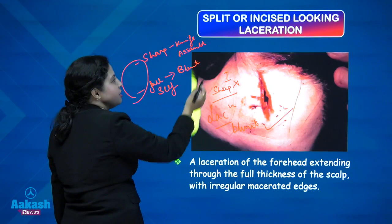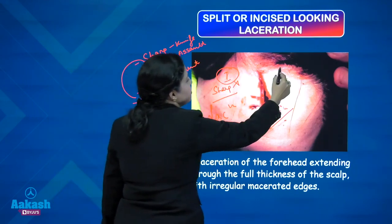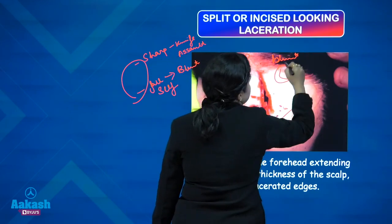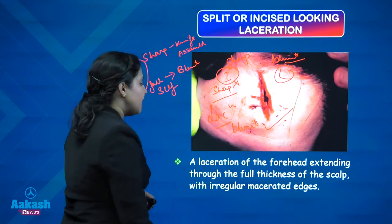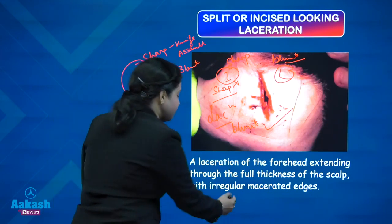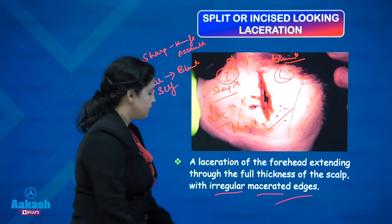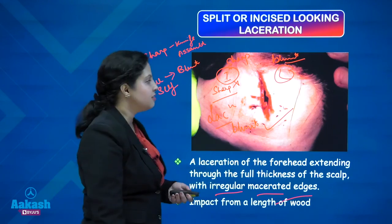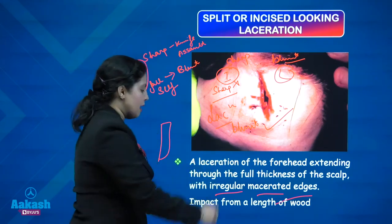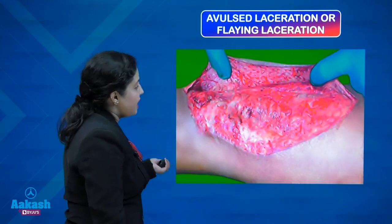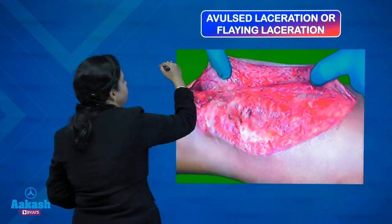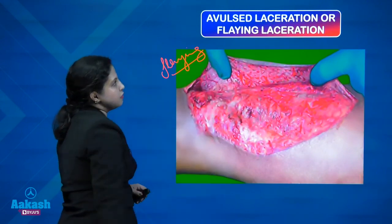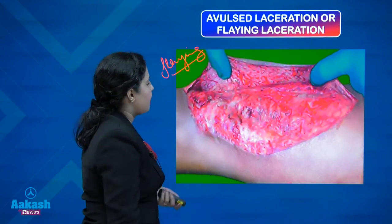The most important thing to remember is the causative weapon. The moment we say incised, it becomes a sharp force injury; the moment we say laceration, it becomes a blunt weapon injury. So we need to be extra careful. For example, a laceration of the forehead extending through the full thickness of the scalp with irregular macerated edges — impact from a length of wood — is a lacerated wound. Evulsed or flaying laceration involves a flap of skin that is present, caused by this flaying application of force.